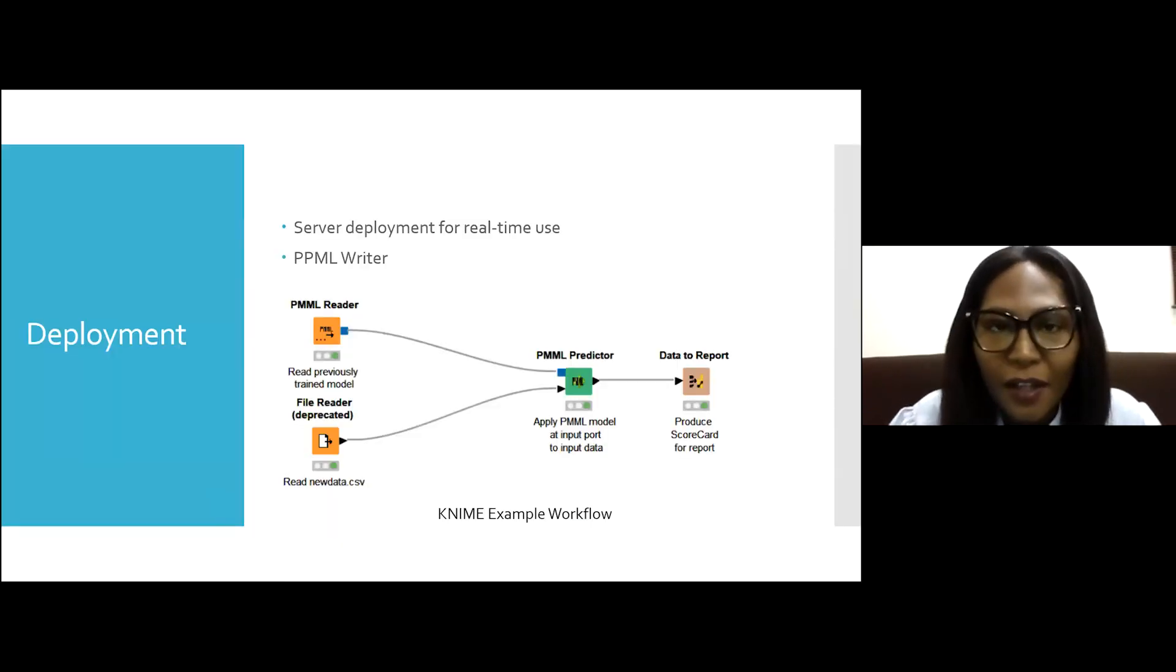And for the deployment side, you can deploy in the server for some real-time use. For instance, credit card companies use this all the time. Whenever you go to the supermarket, you usually have some algorithms checking your transaction to see if it's likely to be fraud. And those rely on real-time deployments. But you can also write your model to a PMML writer. This lets you use that model within KNIME. So right now, if you do the model to predict customer churn, we can actually bring in some new customers, run them through the model, and see if they're likely to churn so that we can take action to keep them as part of the company.